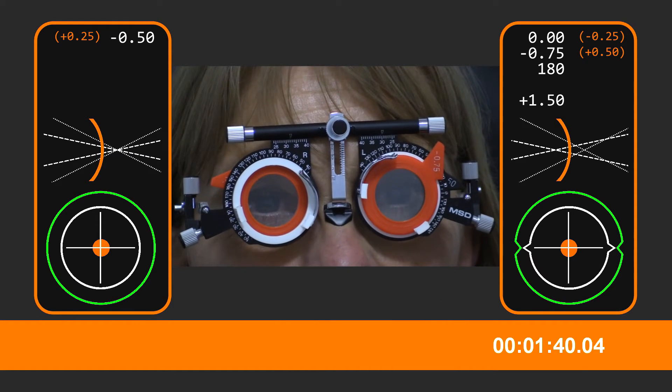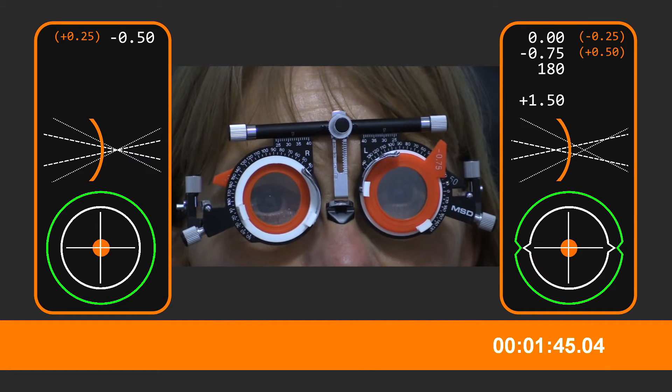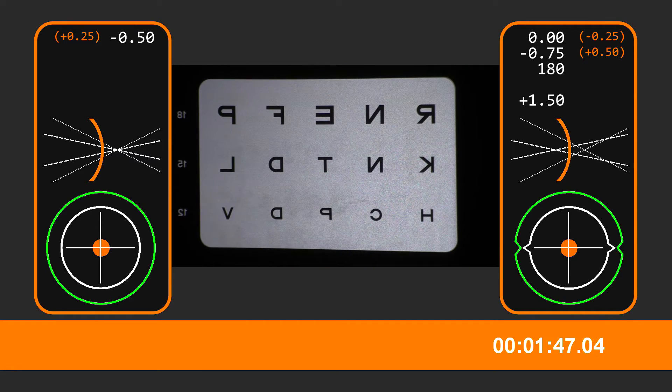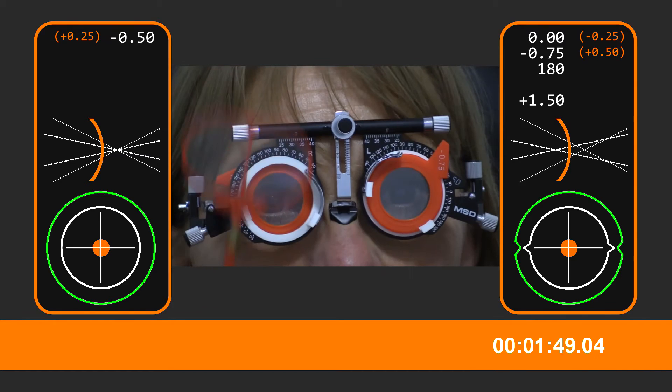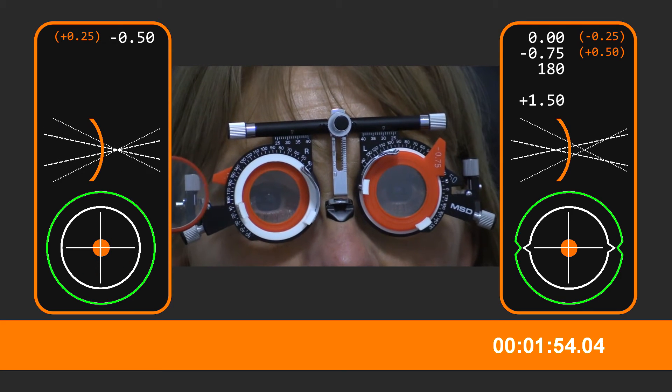Now, we're going to work on the right eye. I want you to keep both eyes open, okay? Can you see the bottom line there, the H, C, D line? If you look at those letters there, are they clearer with this one or clearer without? Without. What about this one? Without.